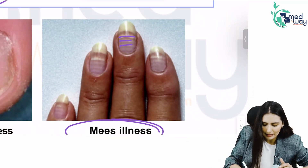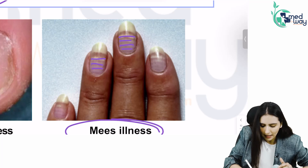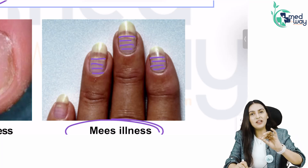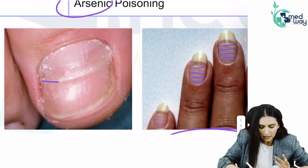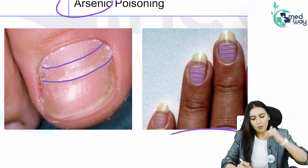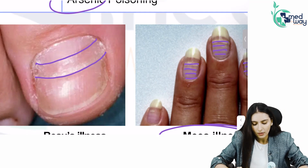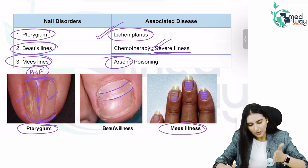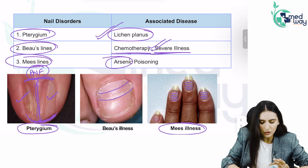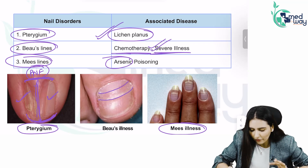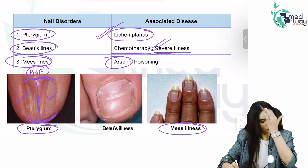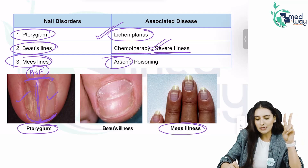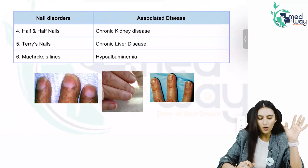In Mees' lines, you will see white lines but you will not feel any depression — the nail will feel uniform. In Beau's lines, if you look at the image properly, there is a proper depression because there is a problem in the nail matrix. So in Beau's lines you have a depression; in Mees' lines there is no depression.